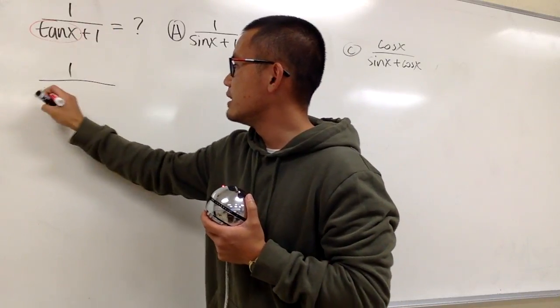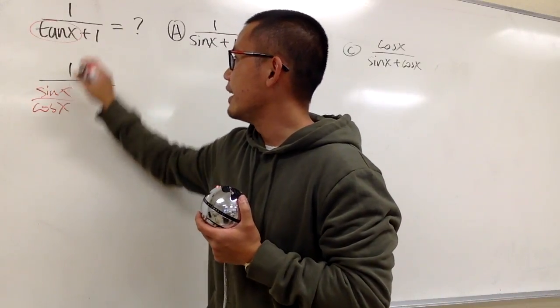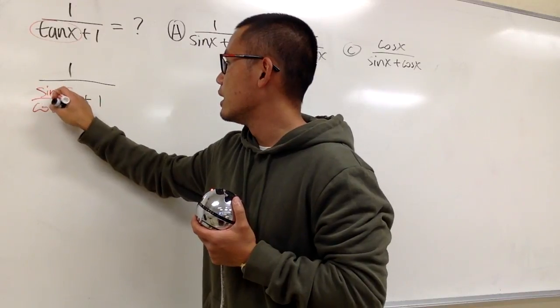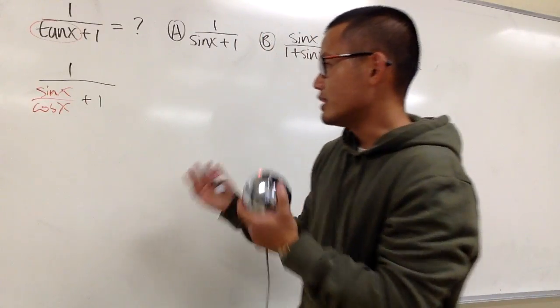1 over, this is sine x over cosine x, and then we still have the plus 1 after that. And as you can see, this is a complex fraction. It's more intimidating,